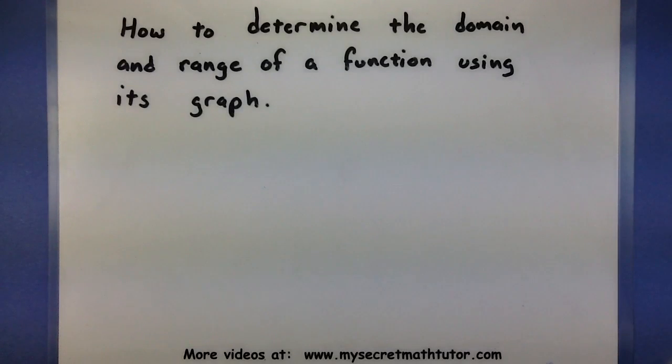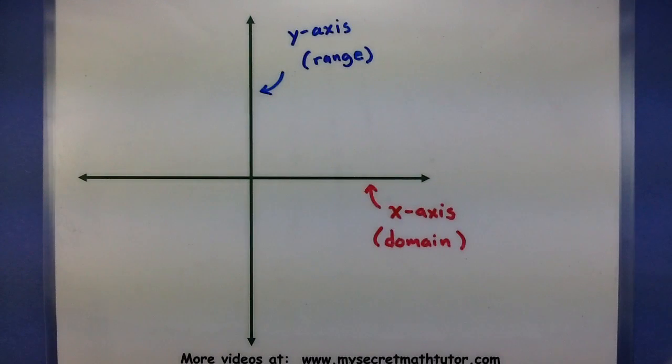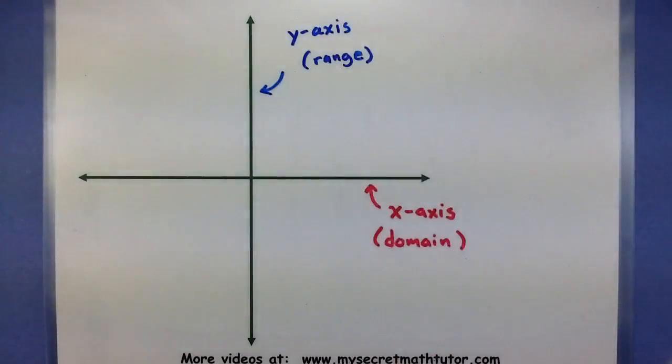To do this with just a graph, you want to figure out what are the inputs and what are the outputs. This essentially comes from the x and y values. When we get down to determining the domain, we'll be looking at the x-axis quite a bit. When we get to determining the range of that function, we'll be looking at the y-axis or the y values.